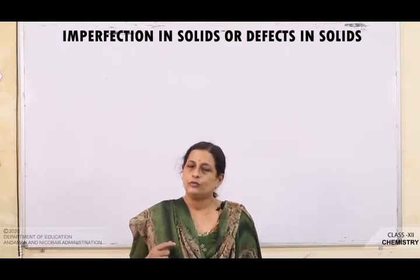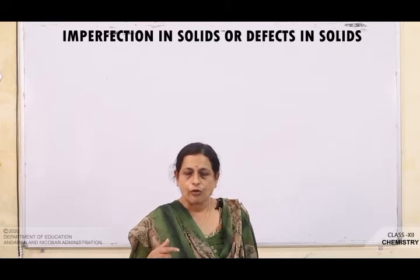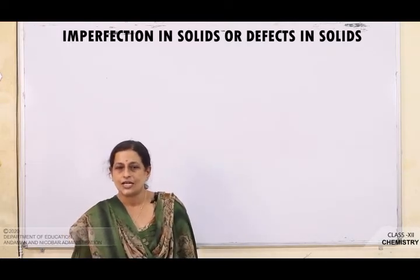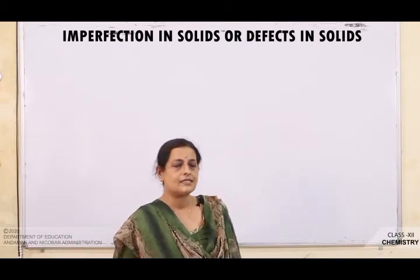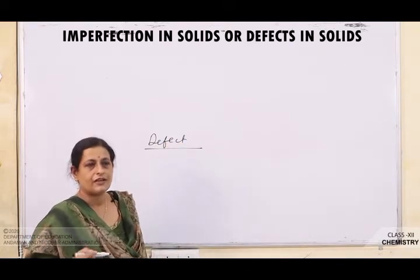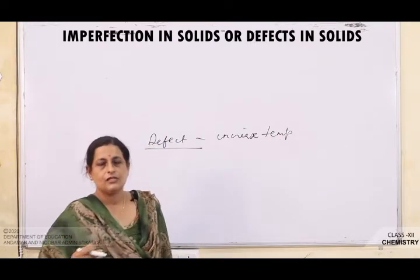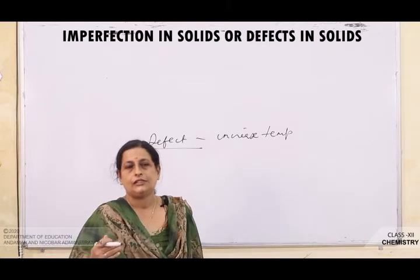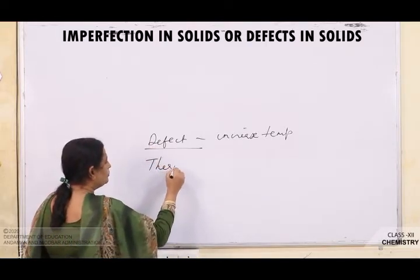Once we slowly start increasing the temperature, the vibratory motion of the constituent particles also starts increasing. When that happens, some of the constituent particles leave the lattice site or may occupy the interstitial site. So when the lattice site is disturbed — when ions leave the lattice site or occupy the interstitial site — a defect is produced in the crystal. Any deviation from the orderly arrangement gives rise to a defect, also known as a thermodynamic defect.